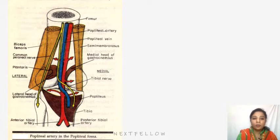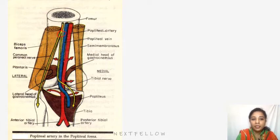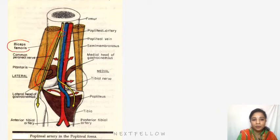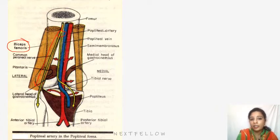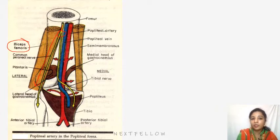It descends obliquely. You can see here the sciatic nerve terminating by dividing into the common peroneal and tibial components. The common peroneal nerve lies along the lateral side, along the biceps femoris, and reaches the neck of the fibula. It descends obliquely along the lateral side of the popliteal fossa till the head of the fibula, lying between the tendon of biceps femoris and the lateral head of gastrocnemius.